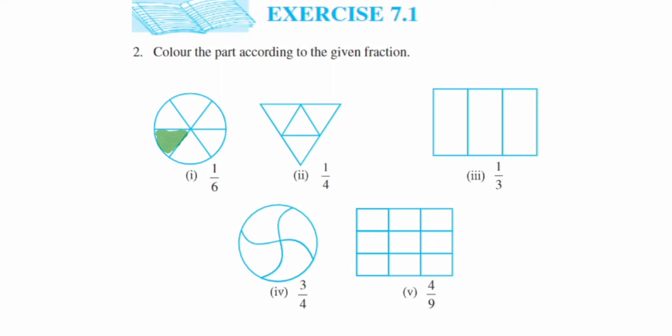Now second one. In the second one you can see we have 1 upon 4. So 1 upon 4 means 4 parts are given, out of that only one part we have to color. So you can color anywhere in any one part. So here I am coloring with a green color.